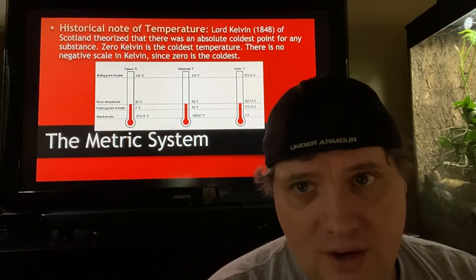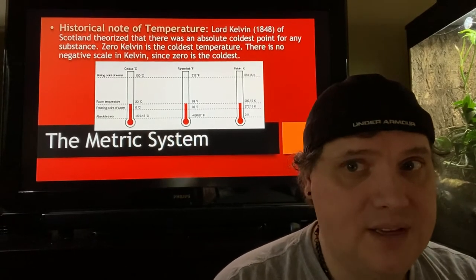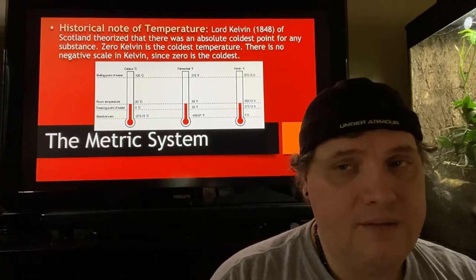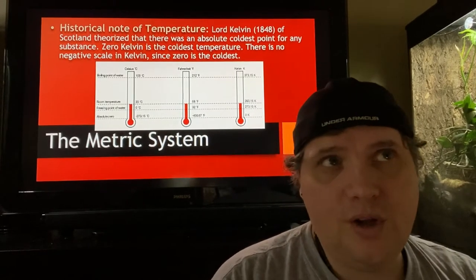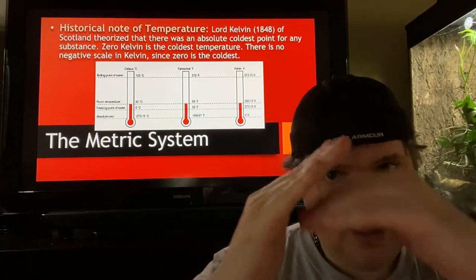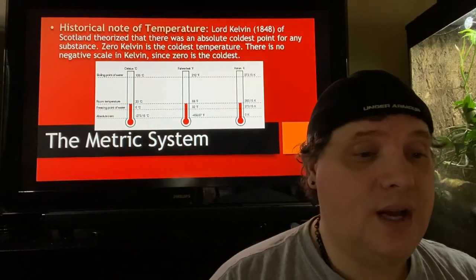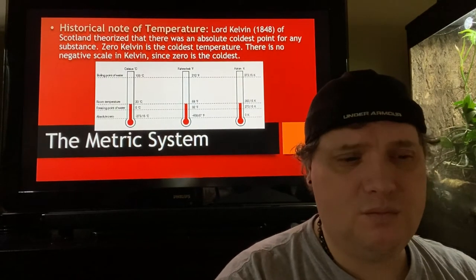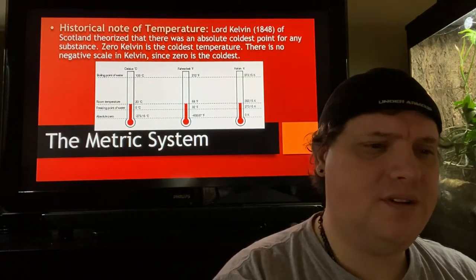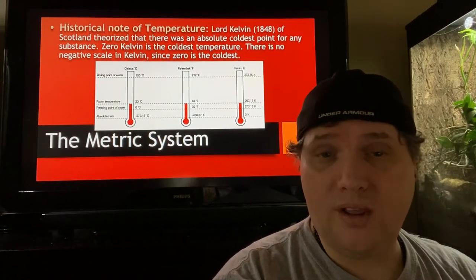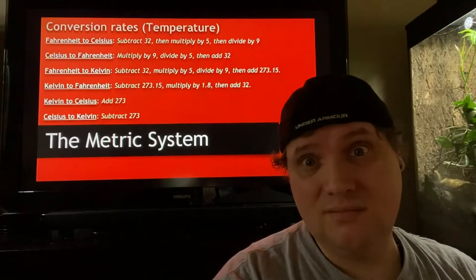Fahrenheit, just to kind of give you an idea, was oftentimes based on the body temperature. Our body temperature usually sits around 98.5. And if you don't have really, really good instrumentation, you can see where that might be the baseline of 100. And then they went from there. That was the idea behind Fahrenheit. If you're wondering why we have like 32 for freezing water, but then 212 for boiling, it's because it was based on body temperature.